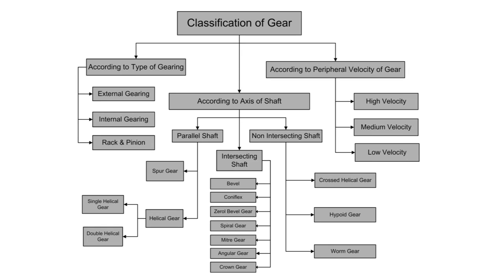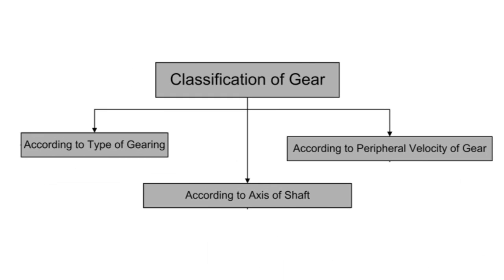This is a flow chart of gear classification. Gears are classified into three groups: according to axis of shaft, according to peripheral velocity of the gear, and according to the type of gearing.